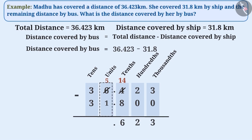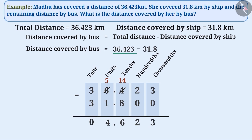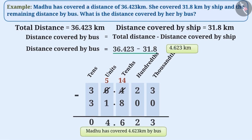Now, if we subtract the digits at the tenths place, we get 4 at the tenths place as the result. Similarly, by subtracting the digits at the units place, we get 0 at the units place of the result. As you can see, 4 is at the tenths place, 6 at the hundredths place, 2 at the thousandths place, and 3 at the ten-thousandths place. Therefore, we can say that 36.423 minus 31.8 is equal to 4.623. That is, Madhu has covered 4.623 kilometers by bus.